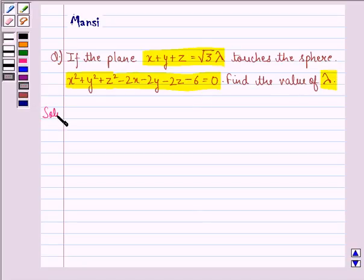So let's see the solution to this question. The sphere is x² + y² + z² - 2x - 2y - 2z - 6 = 0.